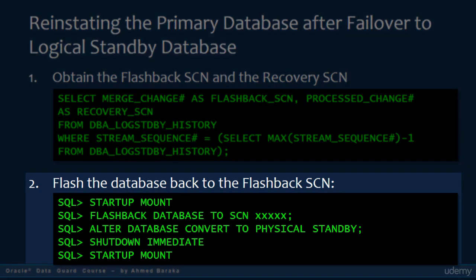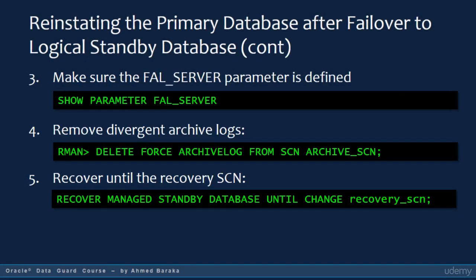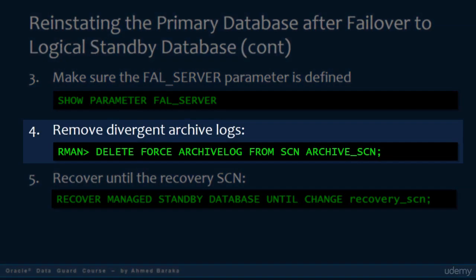Secondly, flash the database back to the flashback SCN and remount the database, as shown in the slide. In the third step, you make sure that the file server parameter is pointing to the new primary database. After that, you remove the divergent archive logs — those are the archive logs created at the time of or after the failover operation.